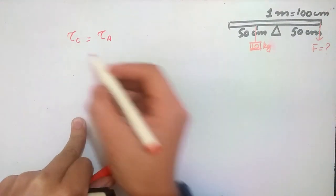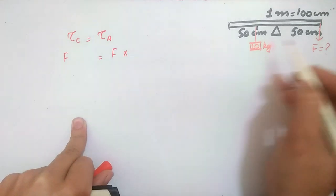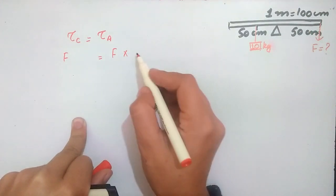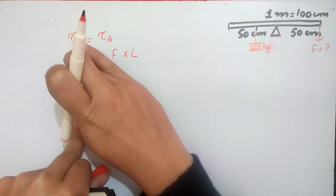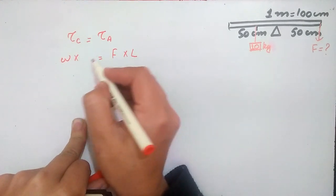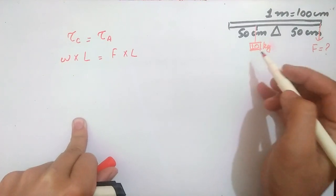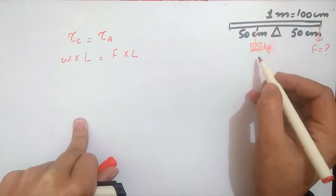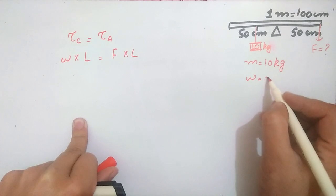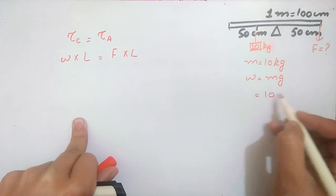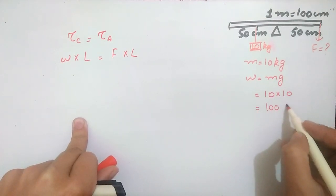This side will be force multiplied by distance, and this side will be the weight W multiplied by the moment arm. The mass given is 10 kg, so weight equals Mg — that is 10 multiplied by gravity, which equals 100 N.